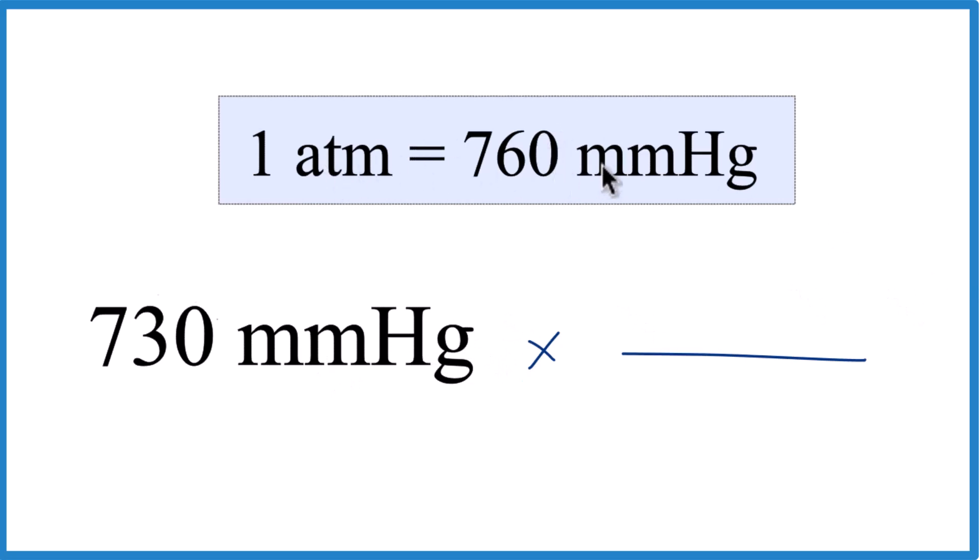And one atmosphere, that's 760 millimeters of mercury. So the millimeters of mercury goes down here, so these cancel out. We have atmospheres on top. That's what we want our final units to be.